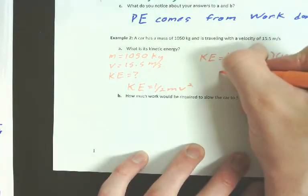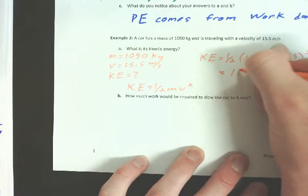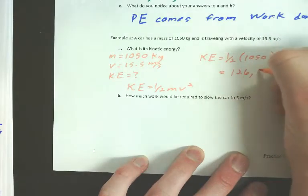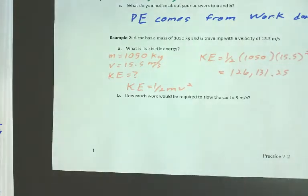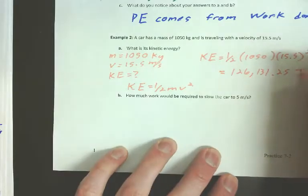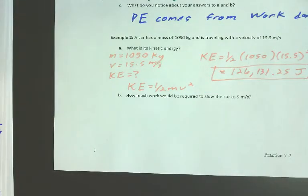So, KE equals 1/2 times 1,050 times 15.5 squared. This number is pretty big. And that's okay. Energies will frequently be large. 126,131.25. You can write in scientific notation if you'd rather save some time. That's fine, too. But there you go. There's the answer. Joules. It's an energy value.